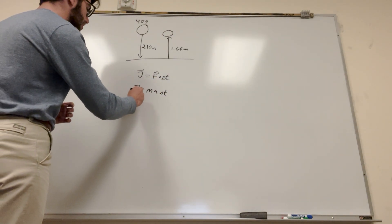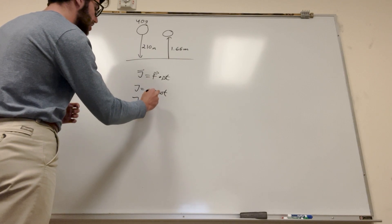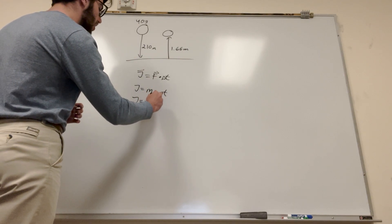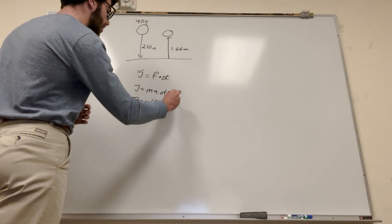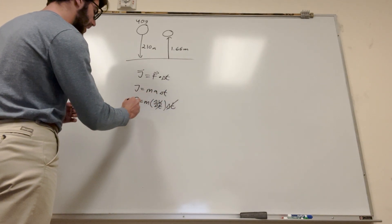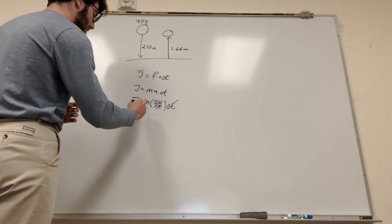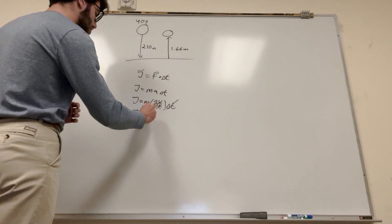It's equal to mass, and then acceleration we know is change in velocity over change in time, but then you're multiplying it by change in time. So the change in time is going to cancel out, and you're just going to find that the impulse is equal to mass times change in velocity.